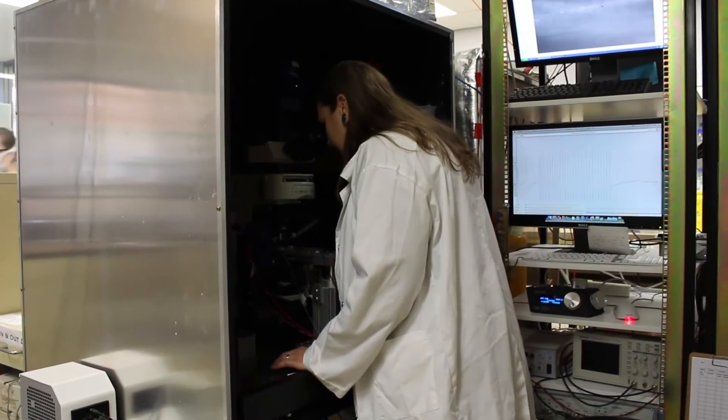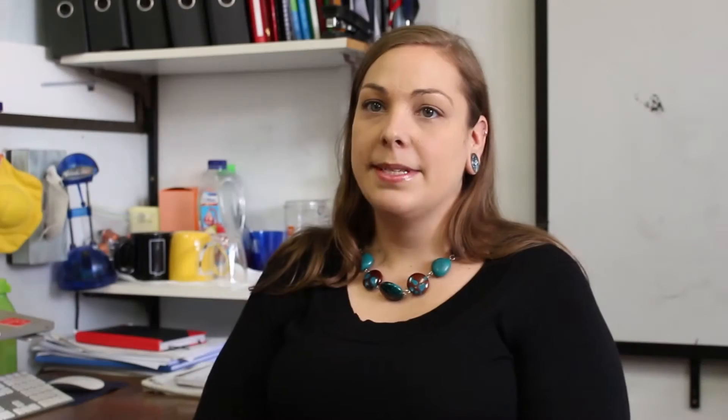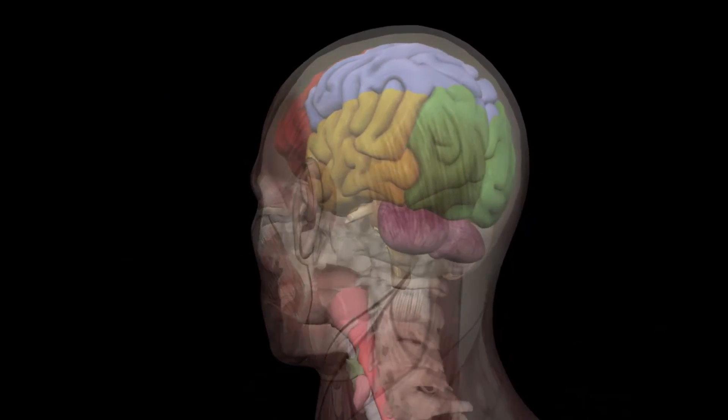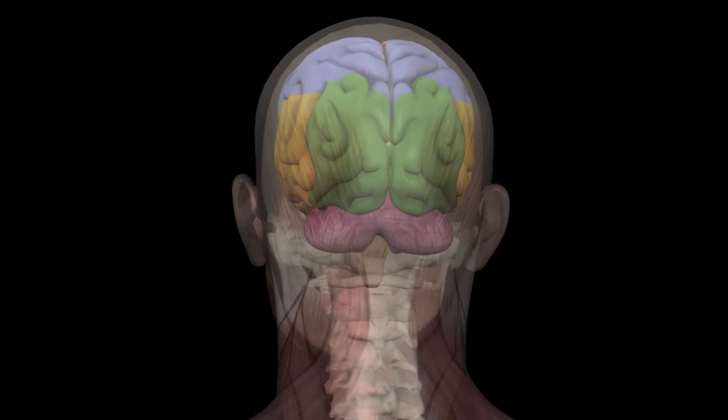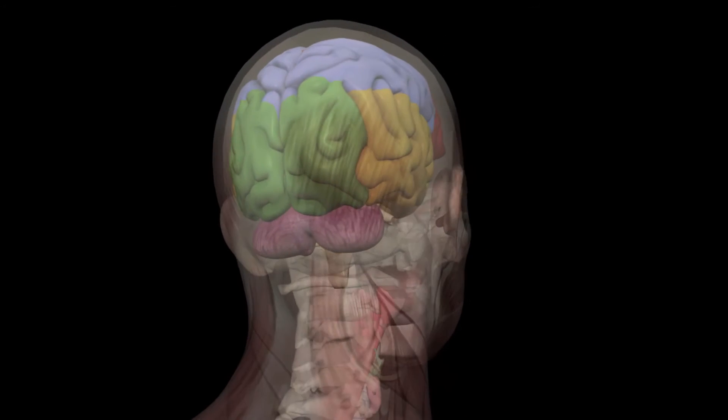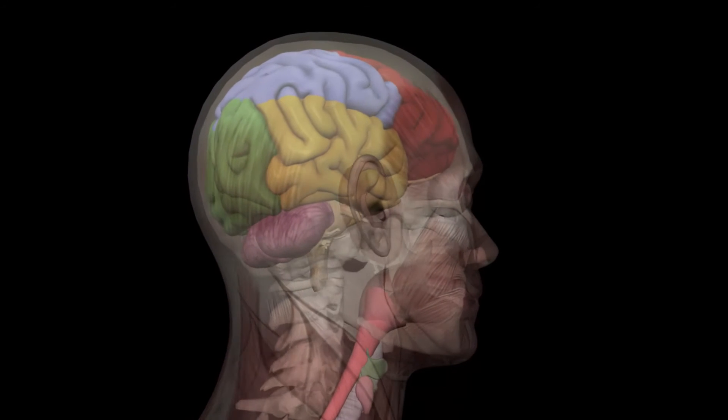Oftentimes when people do receive a spinal cord injury, they're in the hospital for a really long period of time, and it's difficult to know when you can actually start an exercise intervention. The biggest problem is that the messages from the brain have a great deal of difficulty getting to the muscles, because all of those messages travel down through the spinal cord. So when you've injured the spinal cord, you've interrupted the pathway that those messages from your brain take to command your muscles — that's the primary problem leading to the paralysis, and that's what we're trying to address.